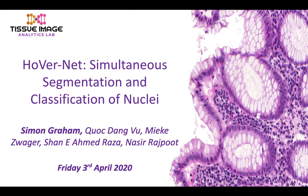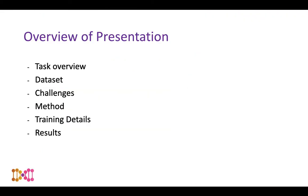Hello, my name is Simon Graham and I'm a PhD student at the University of Warwick in the Tissue Image Analytics Lab. Today I'm going to present our solution to the MoNuSAC Challenge, where we used HoverNet, a network for simultaneous segmentation and classification of nuclei. This work was done by myself in collaboration with Dang Vu, Mika Zweigar, Shan Raza, and Nasir Rajput. We'll first describe the task and dataset, then move on to some challenges, describe our method and training details, and conclude with results.